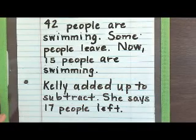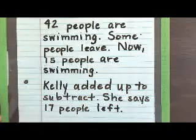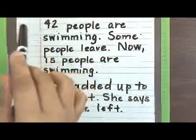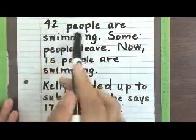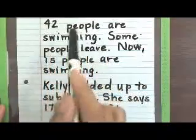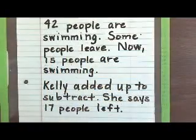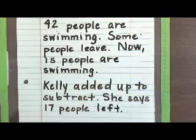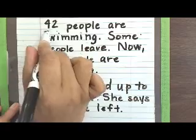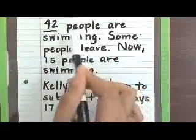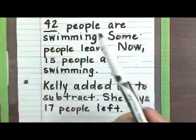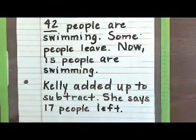Now we're going to read it again, and this time we're going to pull out the important information — the key details. We're going to take it sentence by sentence. The first sentence says 42 people are swimming. The most important thing we need out of there is the number 42, so we're going to underline 42. I do not have students underline 'people' because as long as we have that number, that's the most important part.